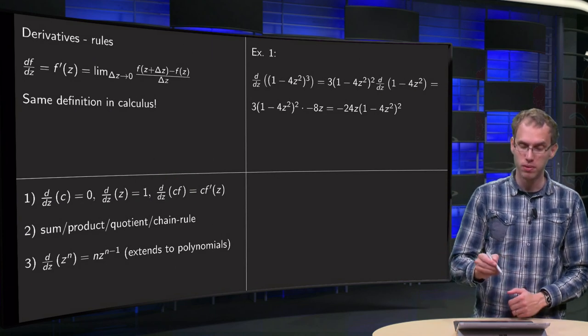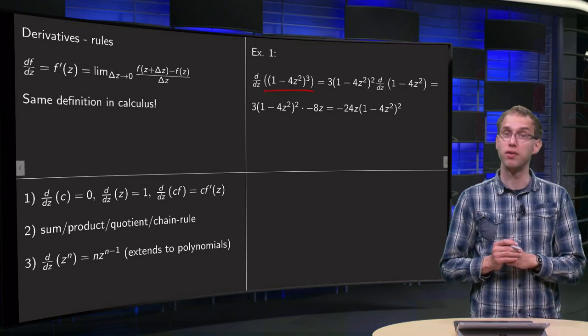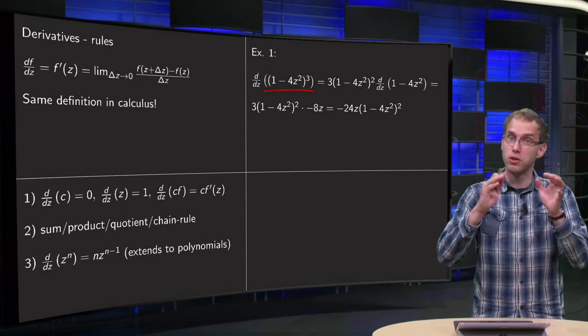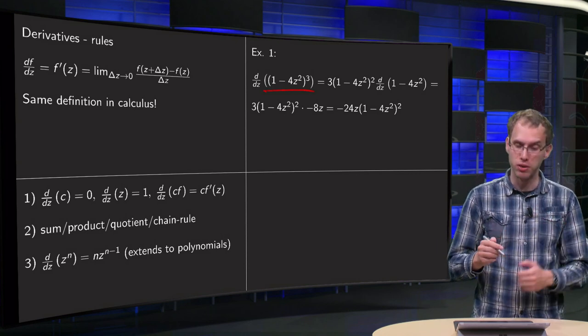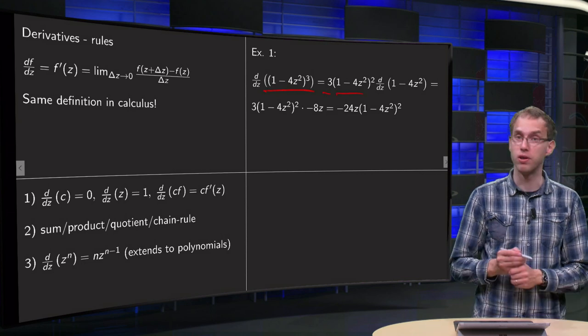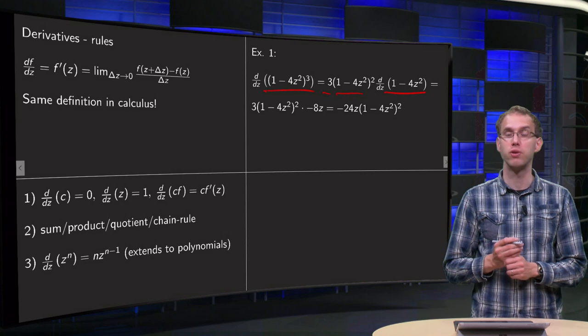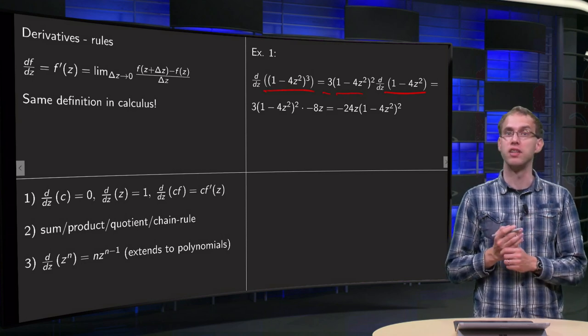So let's do an example. We want to compute the derivative of (1-4z²)³. Well, the chain rule applies, so that equals 3(1-4z²)² times the derivative of (1-4z²), if this derivative exists.